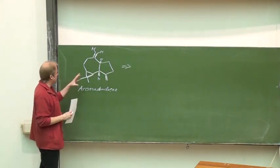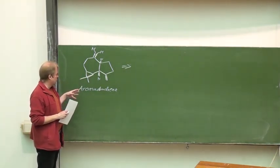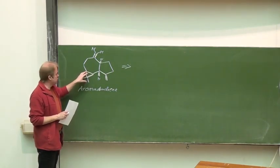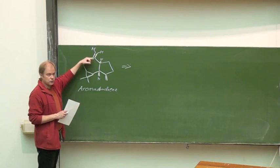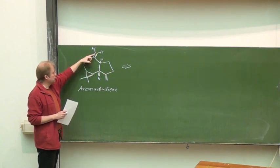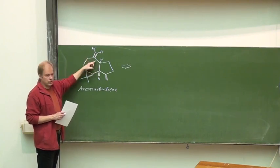The first step in retrosynthetic analysis is fairly easy. Where is the most sensitive functional group? Well, actually, it's not the cyclopropane unit, but the exocyclic double bond. One has to be careful with that because under somewhat acidic conditions, it will presumably isomerize in.